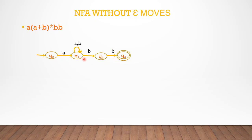We can use this diagram with 4 states — that is the Thompson method. NFA without epsilon — this is the NFA. A into (a plus b) star into BB is equal to this NFA.